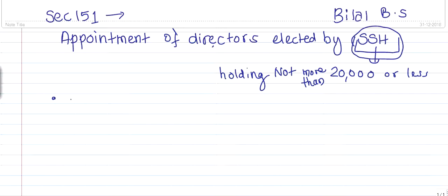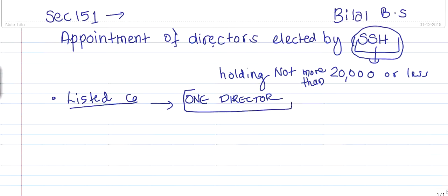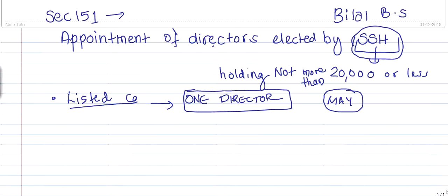This section is applicable to listed companies only. For a listed company, they may appoint one director elected by such small shareholders in the manner and on such terms and conditions as may be prescribed. Note it says 'may appoint' — it is not compulsory. Unlike independent directors, where appointment is mandatory, here it is optional.